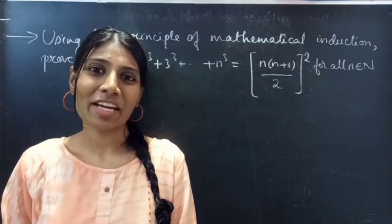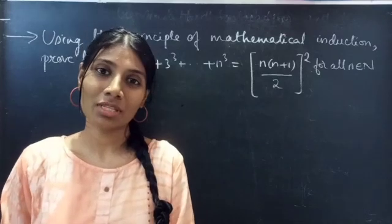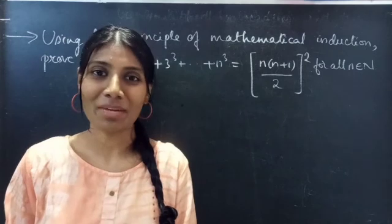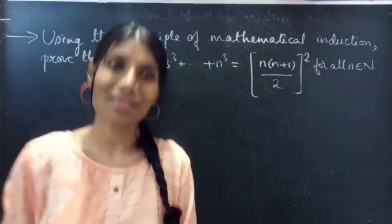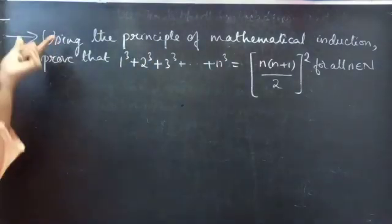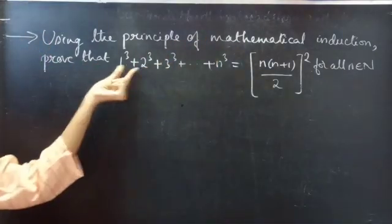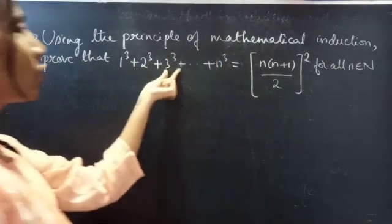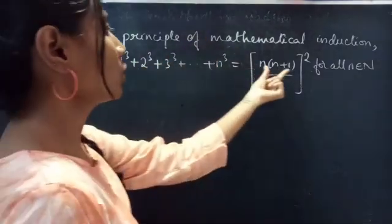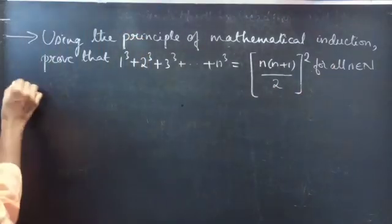Hello everyone, this is Jay Kalpana here. In this video we are going to see a problem from the principle of mathematical induction. Using the principle of mathematical induction, prove that 1³ + 2³ + 3³ + ... + n³ equals n(n+1)/2 whole squared, for all n belonging to natural numbers.